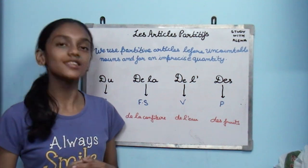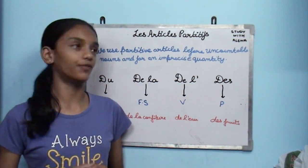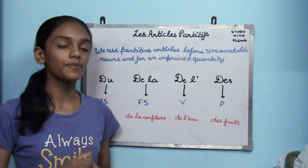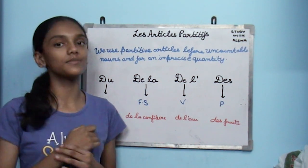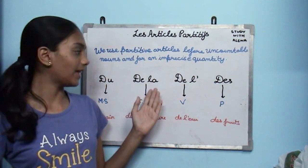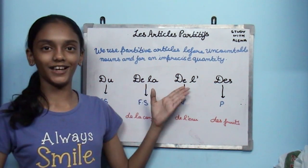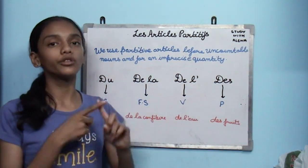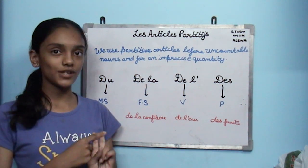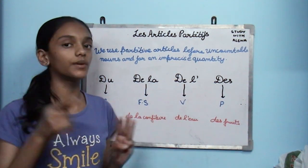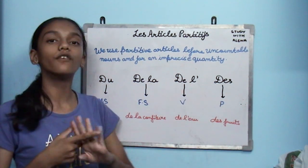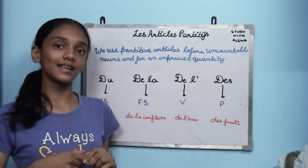Partitive articles are placed before an uncountable noun or an imprecise quantity. We have four forms of article partitif. They are du, de la, de l', and des. Du is used for masculine singular, de la for feminine singular, de l' with an apostrophe for vowels, and des for plural.